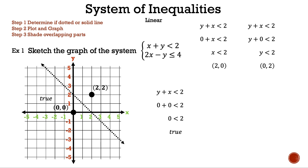Let's substitute the first point (0, 0) into y plus x is less than 2. Our result is true, because 0 is less than 2 is true. Let's check the other point before we shade anything. Let's substitute the second point (2, 2) into y plus x is less than 2. Our result is false, because 4 is less than 2 is false. Now we know to shade to the left.